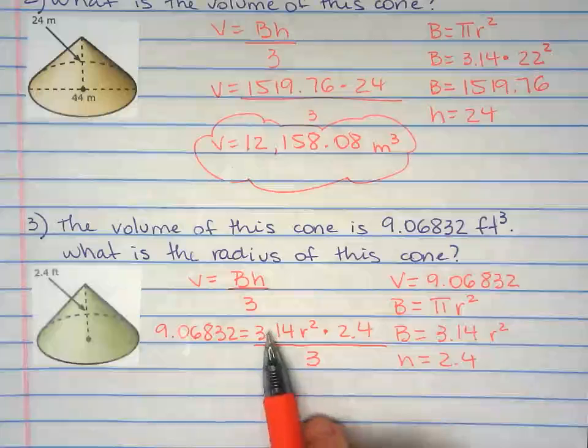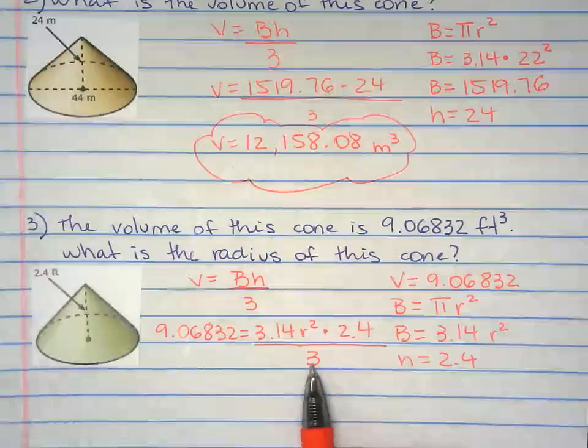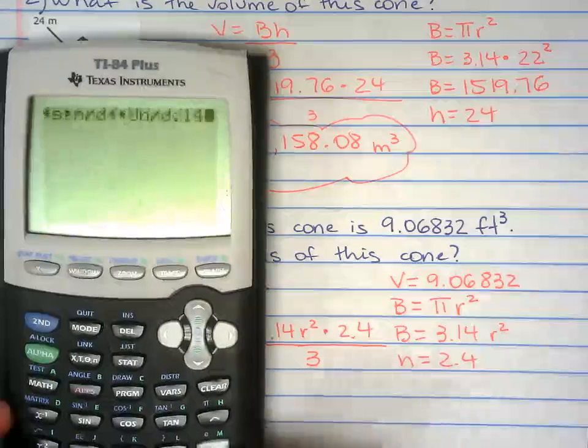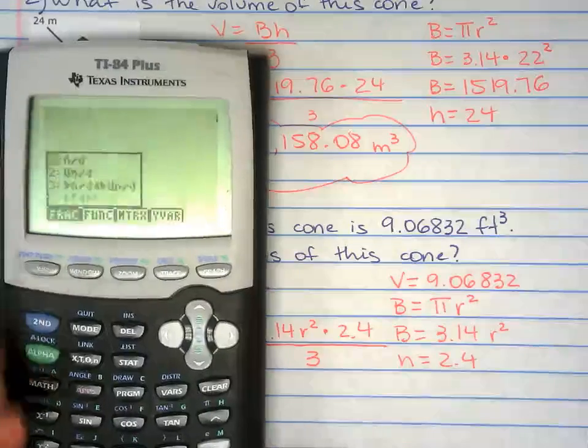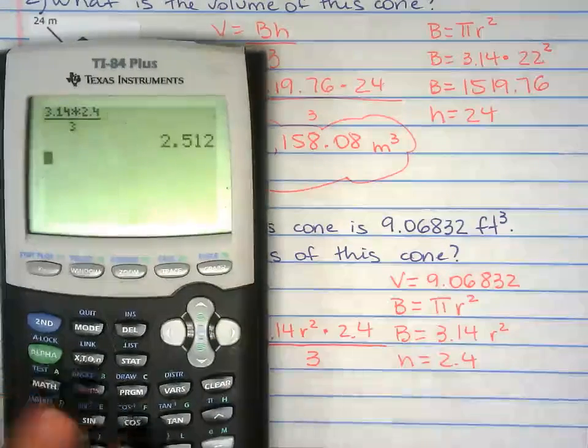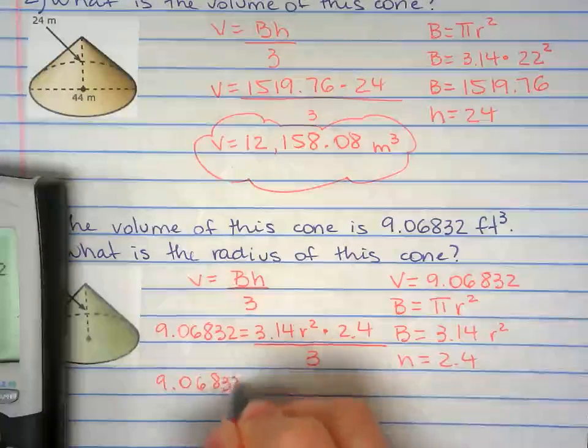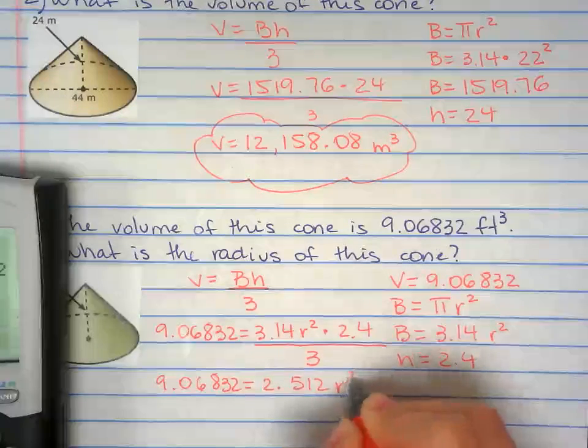So in the calculator, I'm going to plug in 3.14 times 2.4 divided by three.